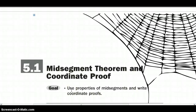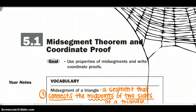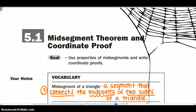We're going to start off chapter 5 by talking about the relationships within the triangle. This section we're going to talk about the mid-segment theorem and coordinate proofs. Getting into our vocabulary, the first thing we need to know is what a mid-segment is. The mid-segment of a triangle is the segment that connects the two midpoints of two sides of the triangle, and within one triangle we have three mid-segments.